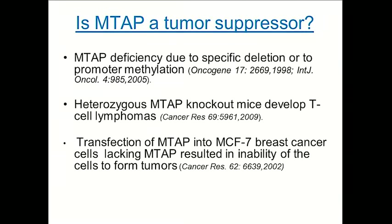Warren Kruger showed that in knockout mice, homozygous mice, it was embryonic lethal. But heterozygous MTAP knockout mice developed T-cell lymphomas late in their lifespan. Additionally, transfection of MTAP into MCF-7 breast cancer cells, which lack MTAP, resulted in the inability of the cells to form tumors. So there's evolving evidence that MTAP is a tumor suppressor in itself.